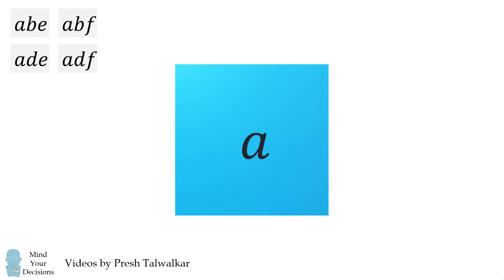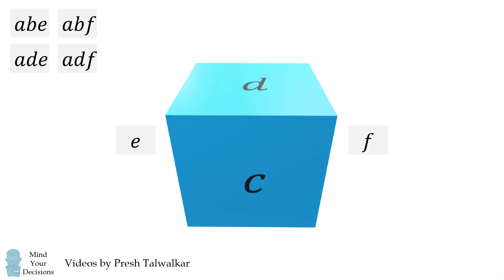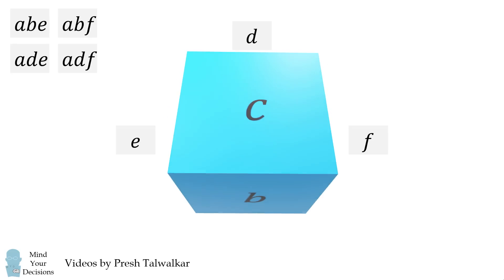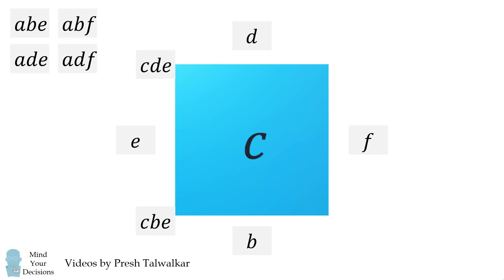Let's put these labels to the side, and now let's label the remaining four vertices, which will be on the opposite side of the cube. So we'll look at face C, and we'll label each of these vertices. On the left side will be E, and on the right side will be face F. On the top of this will be face D, and on the bottom of C will be face B. We can use these labels to label each of these vertices. Starting from the lower left and going clockwise, we have CBE, CDE, CDF, and CBF.